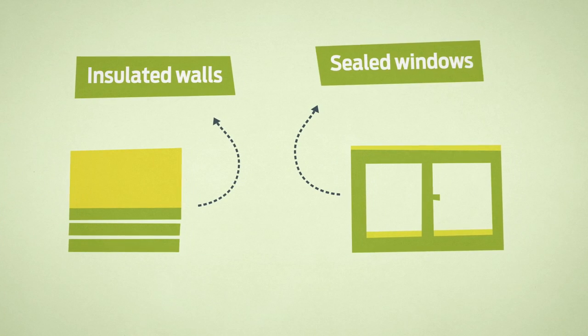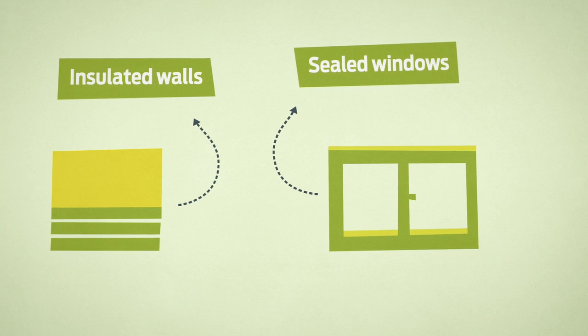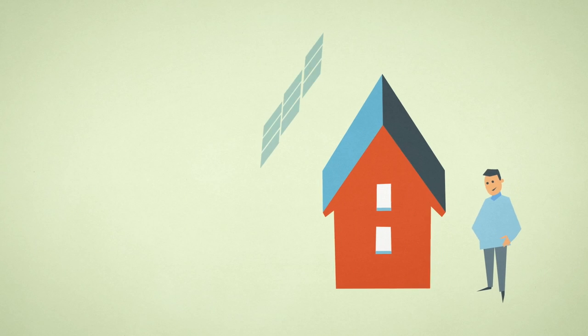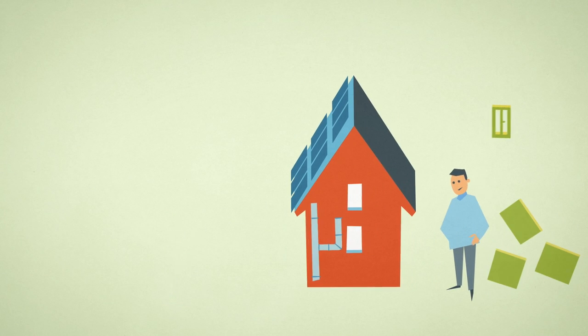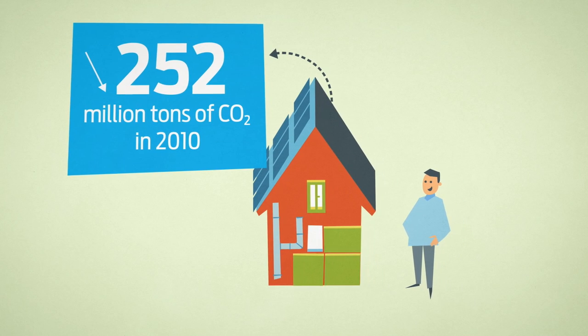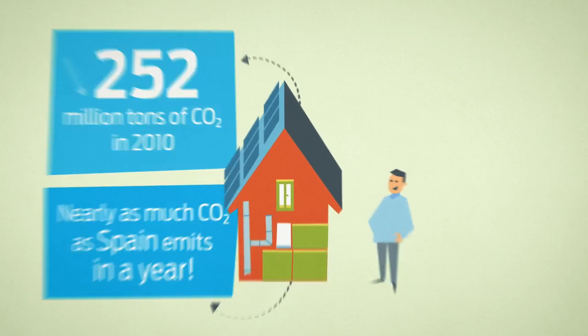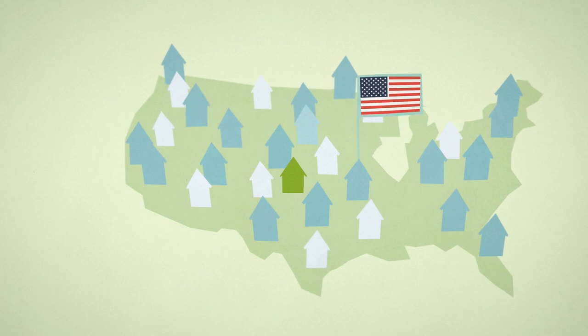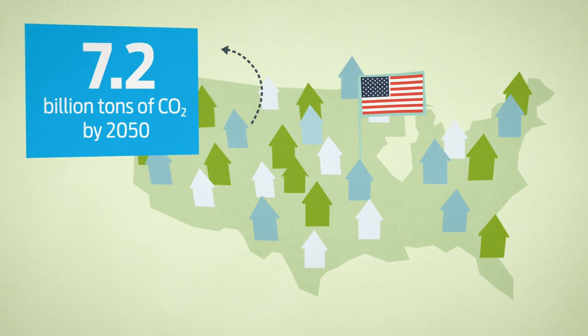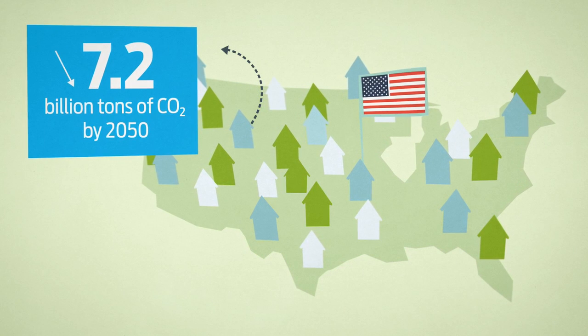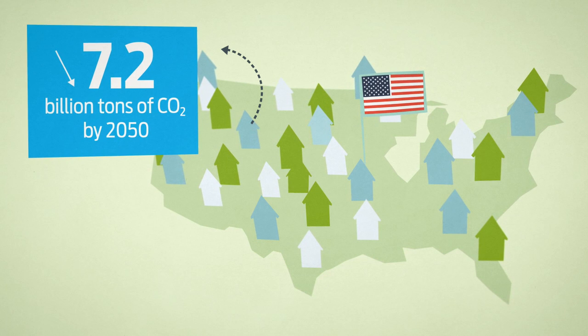For example, energy-saving products installed in homes in the United States prevented nearly 252 million tons of CO2 emissions in 2010. Studies show that if this trend continues, more than 7 billion tons of emissions can be avoided by 2050 in the U.S. alone.